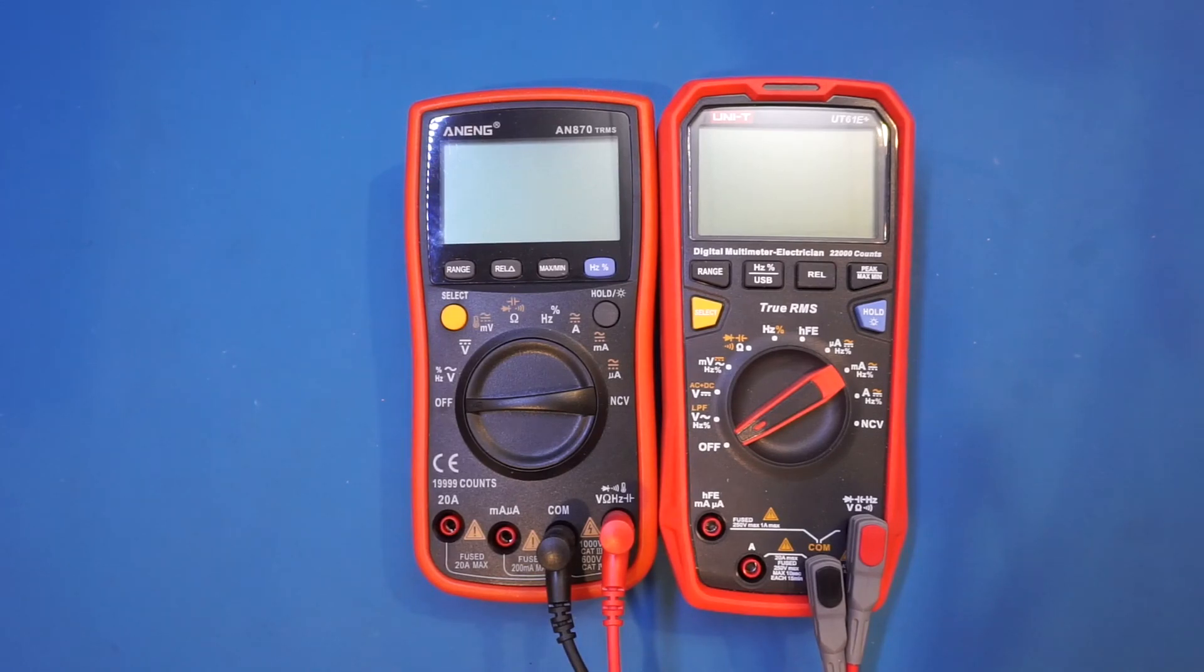So then you may ask why we are comparing these two meters together at all. Well, the truth is that while the UT61E Plus has some slight edges in both resolution and functionality, it also comes at almost twice the price as the ANA70. So which one you choose totally depends on what your priorities are. And hopefully, by comparing some of the features side by side, you can make your decisions easier.